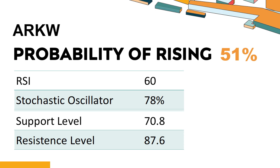The current stochastic oscillator of ARKW is 78%. When the stochastic oscillator stays between 50 and 80, it may indicate that the stock is experiencing a mild downtrend with some selling pressure. In this case, an oversold signal could indicate that a stock is reaching a potential buying opportunity.